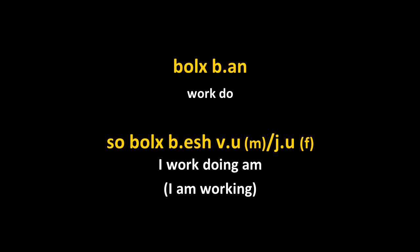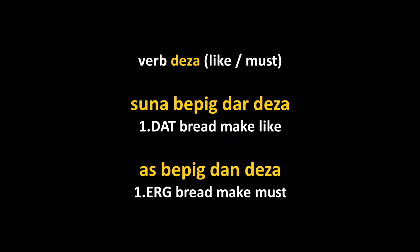Certain verbs in Chechen change their meaning according to the case of their subject. For example, if the subject of the verb dieza is in the dative, it means 'to like': suna biepig dar dieza — 'I like making bread.' But if the subject is in the ergative, it means 'have to, must, should': as biepig dan dieza — 'I must/should make bread.'